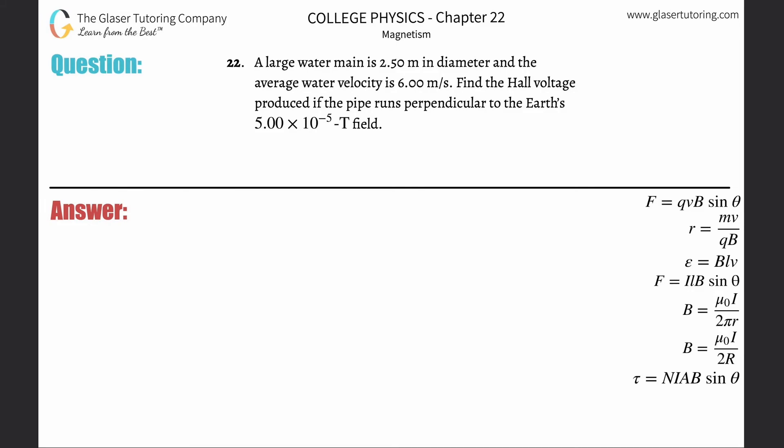Number 22: A large water main is 2.5 meters in diameter and the average water velocity is 6 meters per second. Find the Hall voltage produced if the pipe runs perpendicular to the Earth's 5 times 10 to the minus 5 Tesla magnetic field.